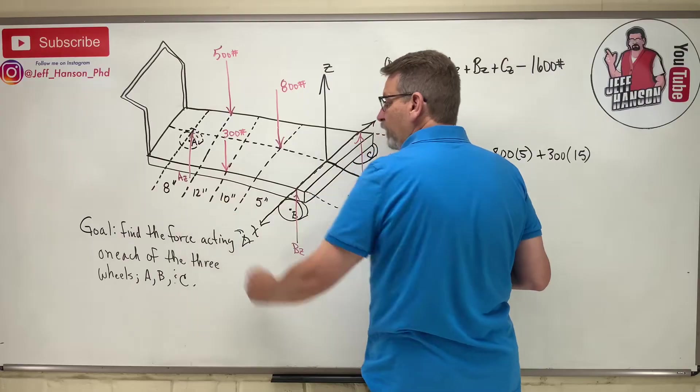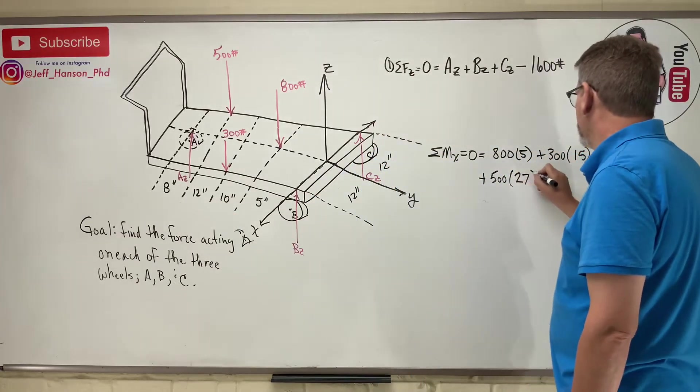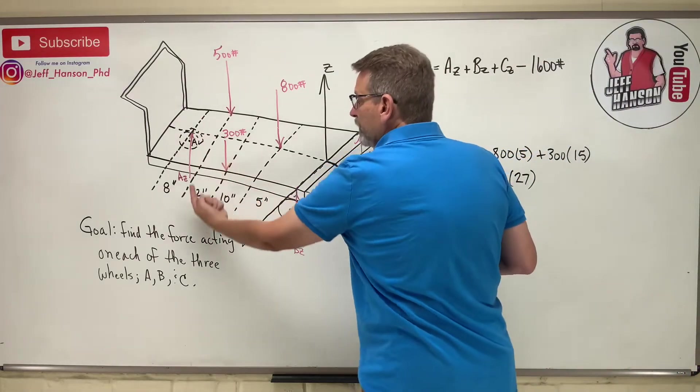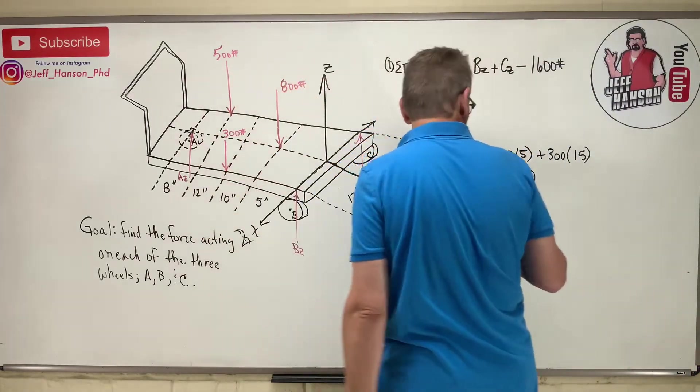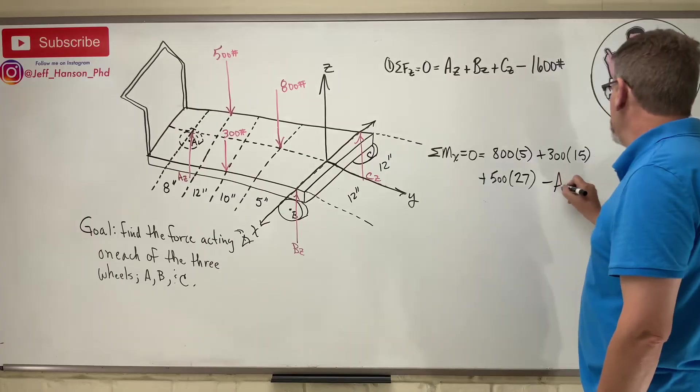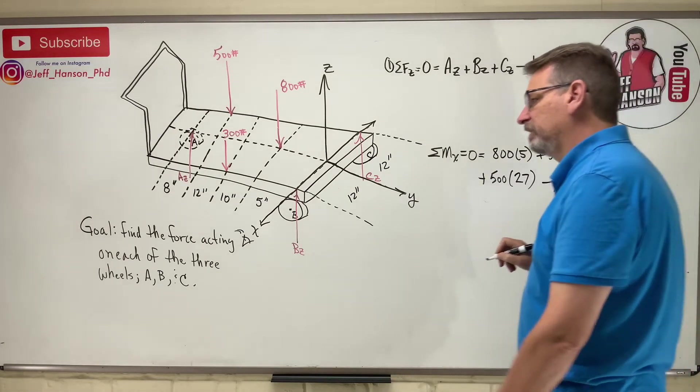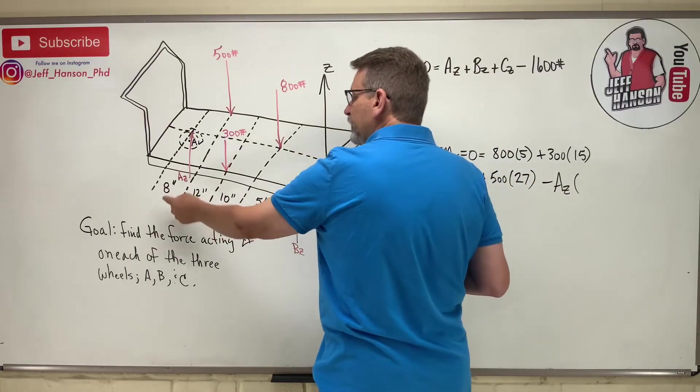And then the 500 up there rotates us the same way, so plus 500 times how far away? 15 plus another 12 is 27. And then Az over here is going to rotate us the other way, so minus Az times what? 15, 27, 35.